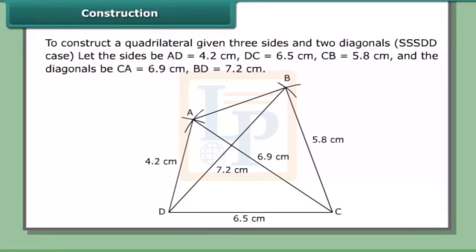Construction. To construct a quadrilateral given 3 sides and 2 diagonals — the SSSDD case. Let the sides be AD = 4.2 cm, DC = 6.5 cm, CB = 5.8 cm, and the diagonals AC = 6.9 cm and BD = 7.2 cm. The two triangles we can construct to complete the quadrilateral are BCD and ACD.